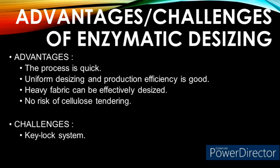Advantages and challenges of enzymatic desizing: This process is very quick — desizing can be completed within 5 minutes, providing uniform desizing and good production efficiency. Even heavy fabrics can be effectively desized and there is no risk of cellulose tendering. The only challenge is that the key-lock system means concentration, temperature, and pH must be maintained properly to achieve effective desizing.